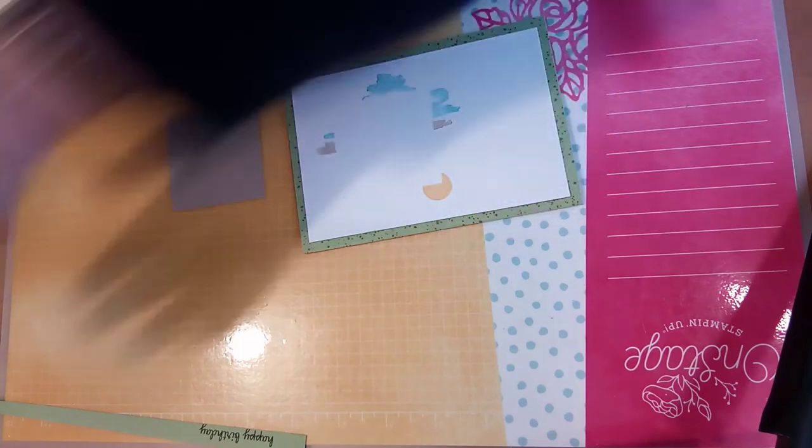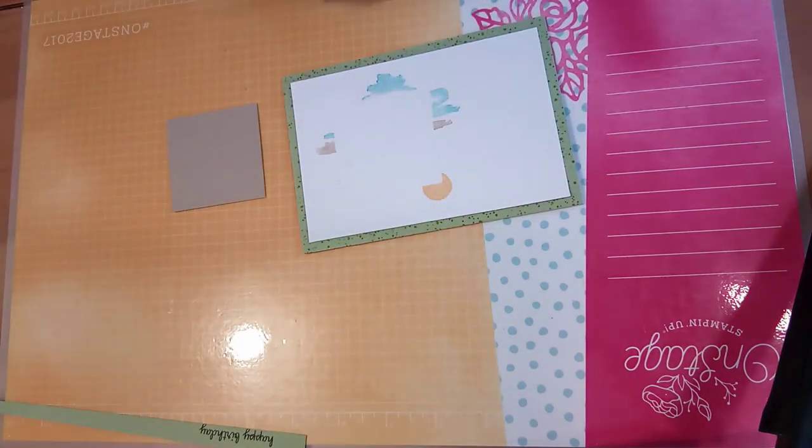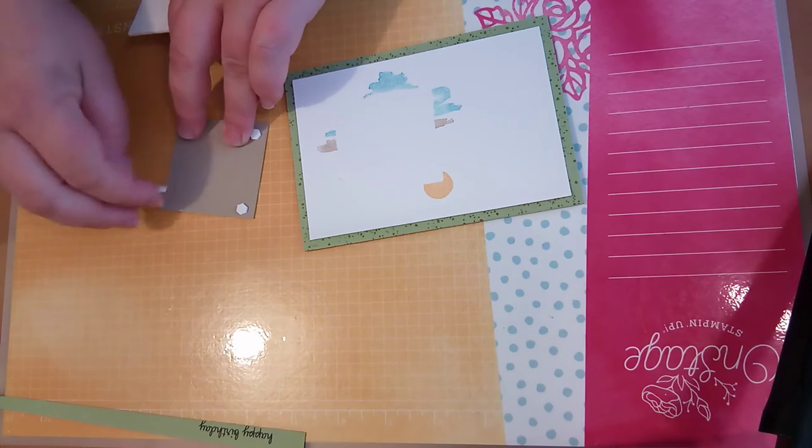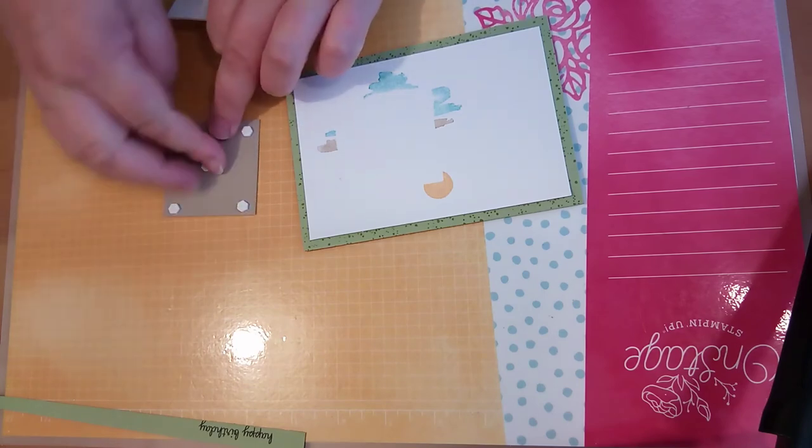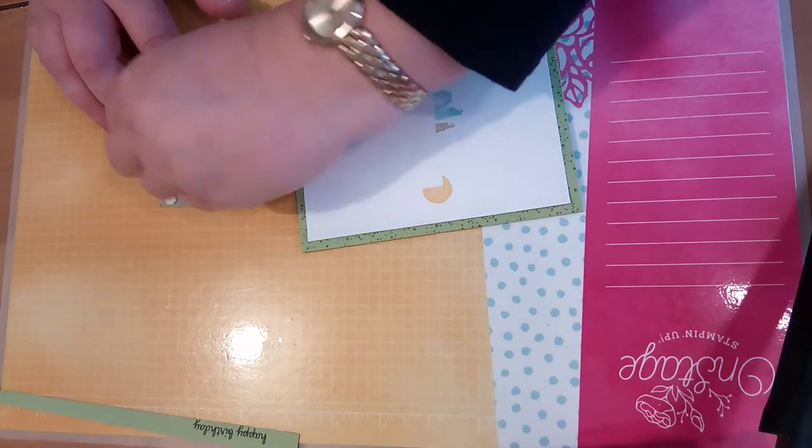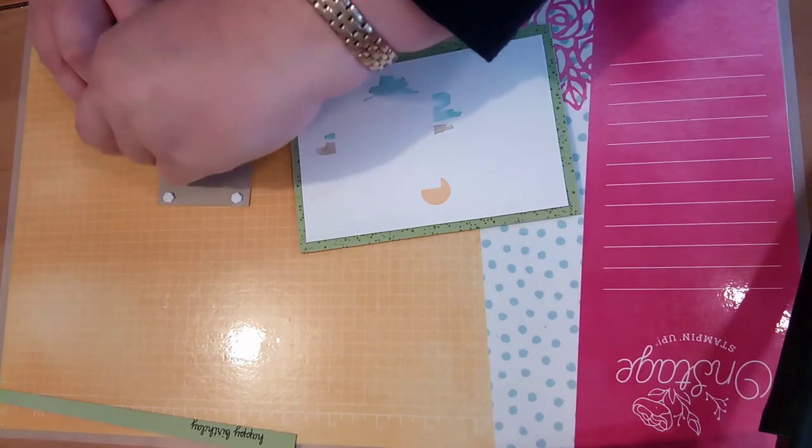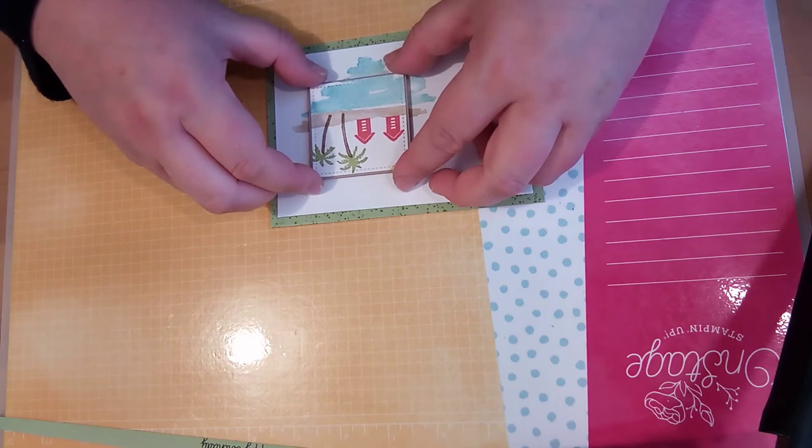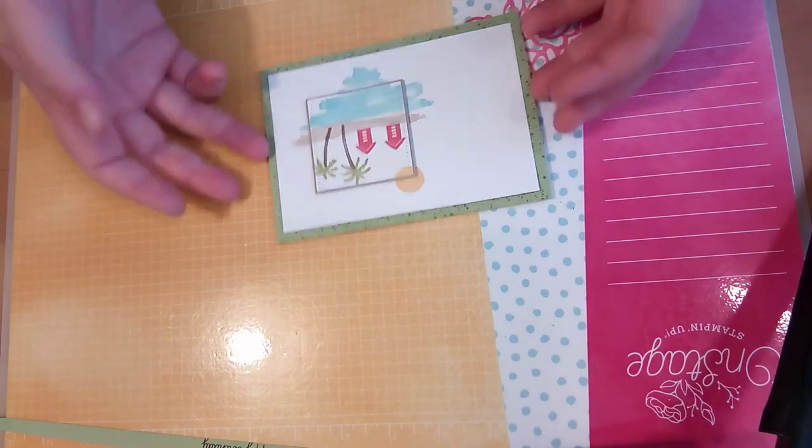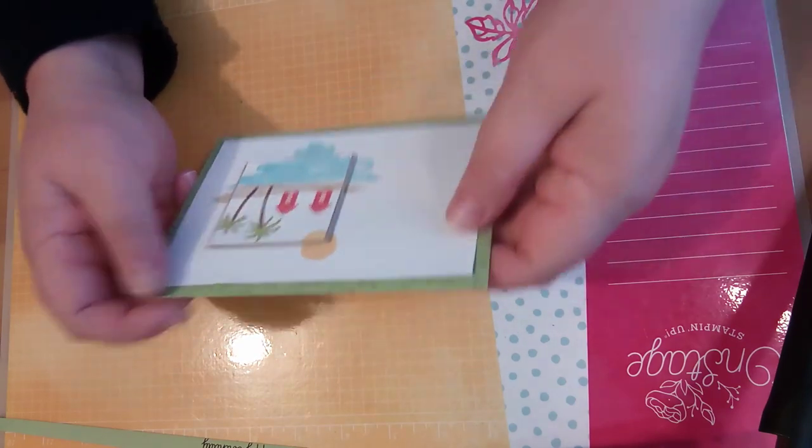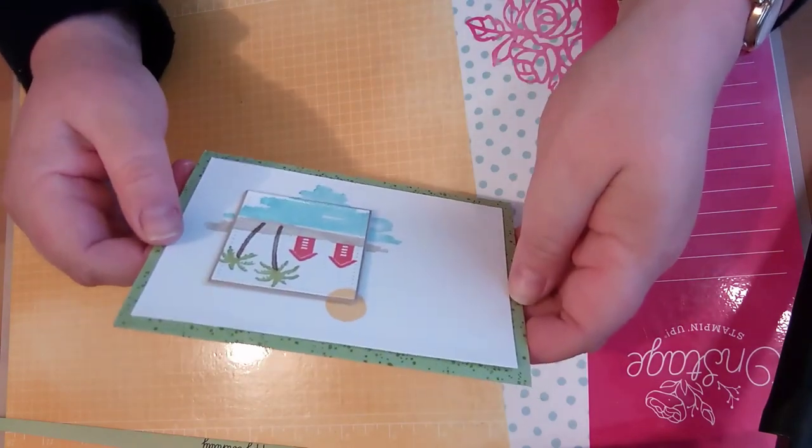And to adhere that we will use Stampin' Up Dimensionals. I've just got a pack of the minis here which are perfect. I find I use them quite often. I still like having the regular size dimensionals because sometimes you just need that extra support, you know the bigger size for the extra support, but for the most part I use the minis now that they've been released. Okay and I'm just going to line this up with the stamps I made as best I can. So you can see there's actually a bit of a border there from that stamping you can see, but I think given the watercolor nature of the stamps, you can't tell at all.